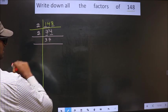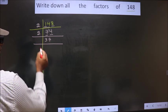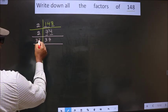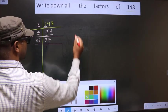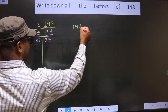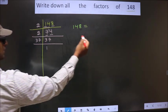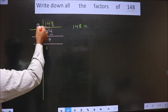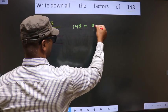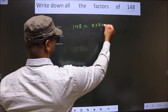Now, here we have 37. 37 is a prime number. So we take 37 once, 37. So now 148 is equal to the product of these numbers. That is 2 into 2 into 37.